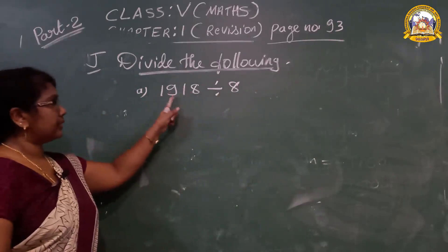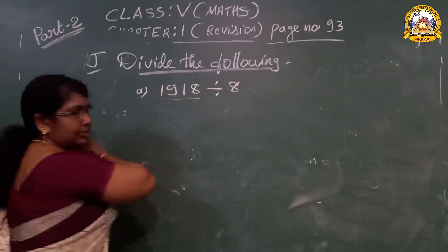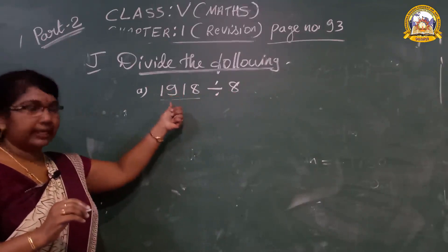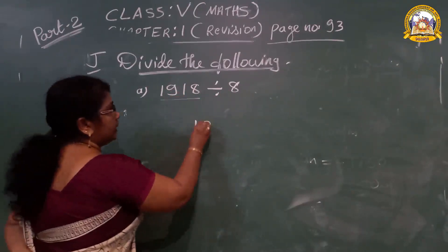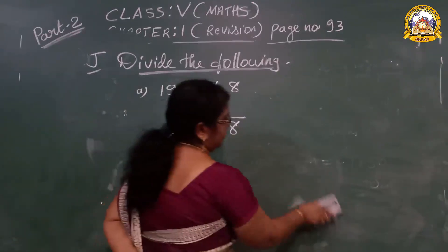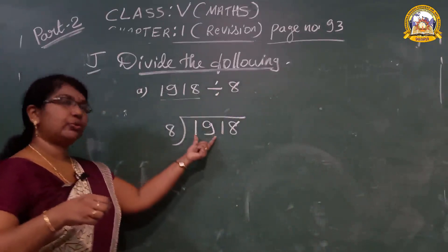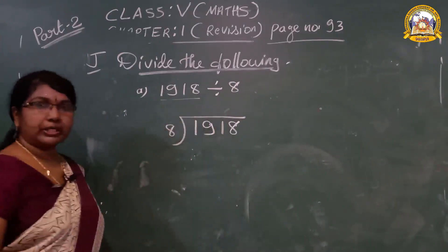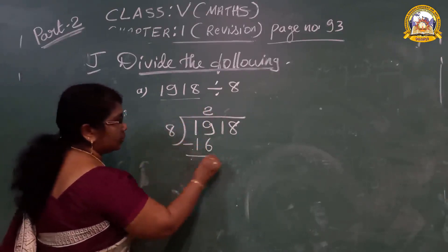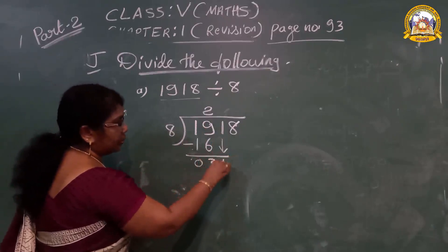Look at the first question: 1,918 divided by 8. This is a 4-digit number divided by a 1-digit number. This number is called the dividend and this is called the divisor. 1,918 divided by 8. Do you remember the 8 times table? 8 ones are 8, 8 twos are 16, 8 threes are 24. Since 24 is greater than 19, you take 2 times: 2 × 8 = 16.